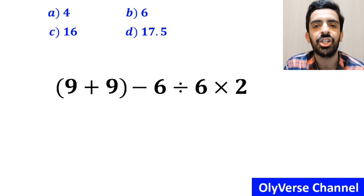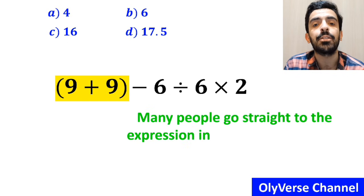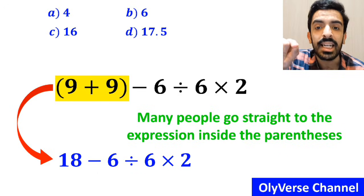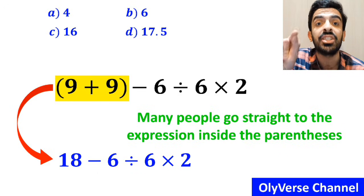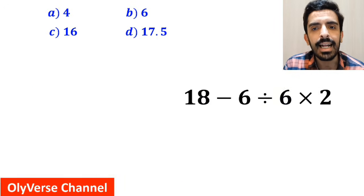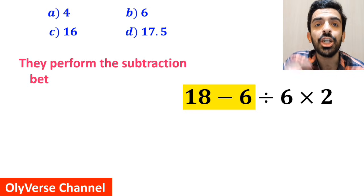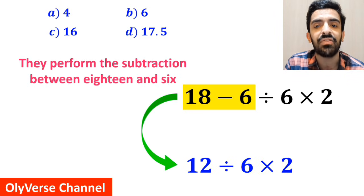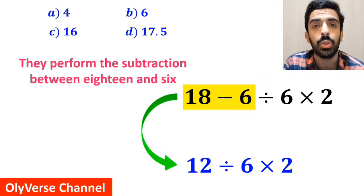At the first step of solving this question, many people go straight to the expression inside the parenthesis and simplify the whole expression to 18 minus 6 divided by 6 times 2. At the next step, they perform the subtraction between 18 and 6 and simplify this expression to 12 divided by 6 multiplied by 2.